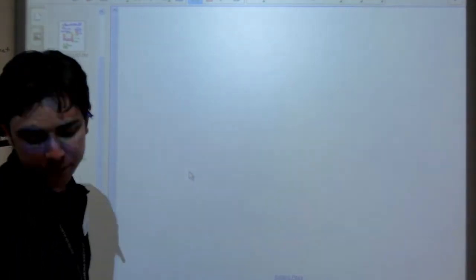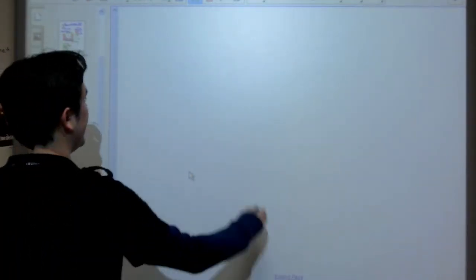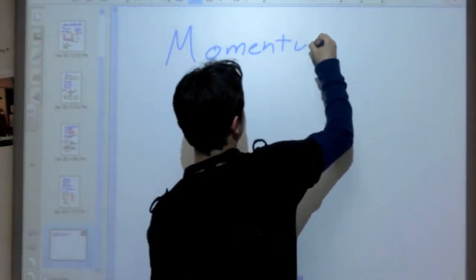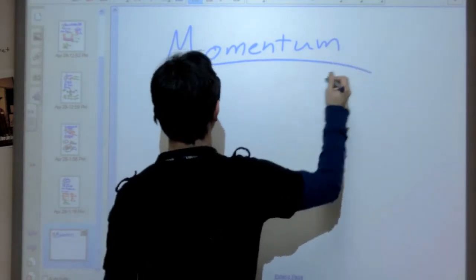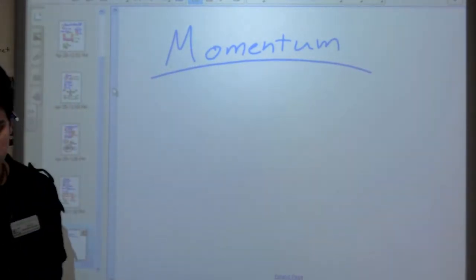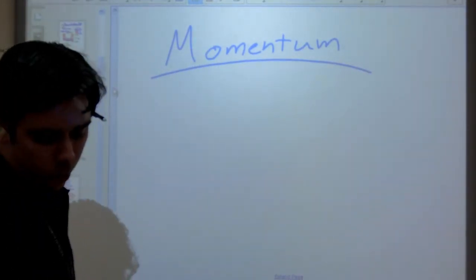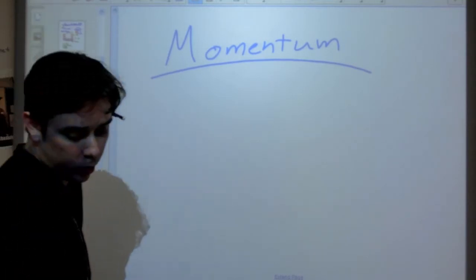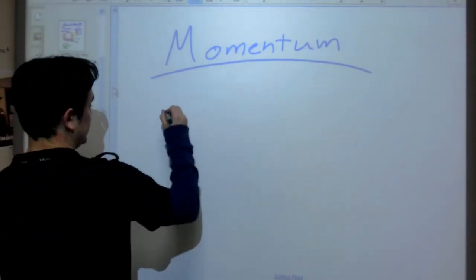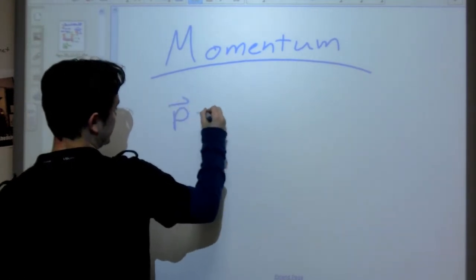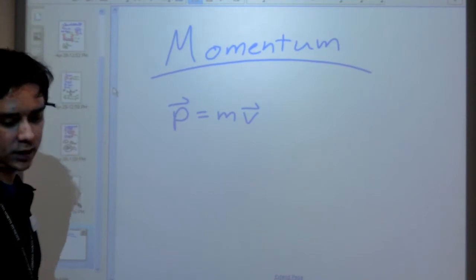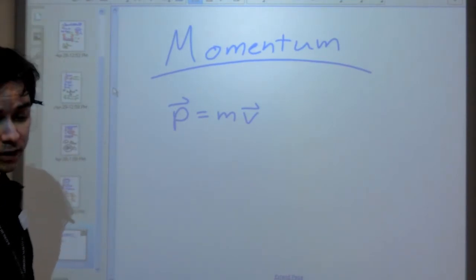Okay, so next up on our broad review, we have momentum. Key equations that we really need here. This one's kind of light on equations overall. The main ones that you fundamentally need, of course, are momentum itself equals our mass times our velocity of our object. That will get you its momentum.